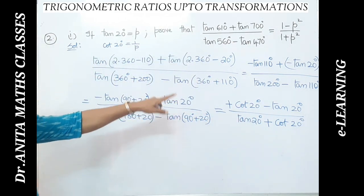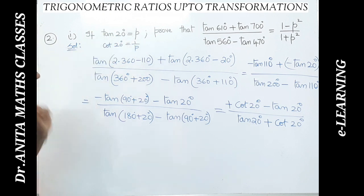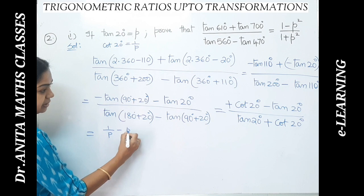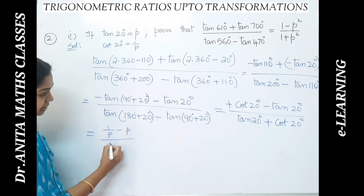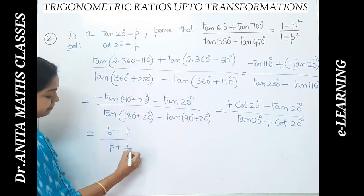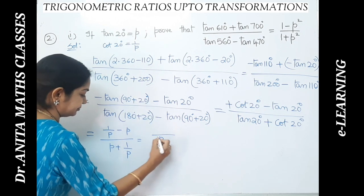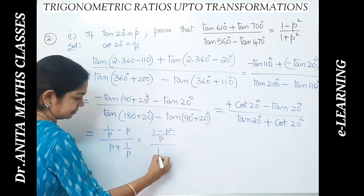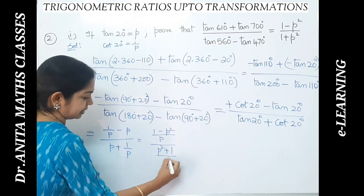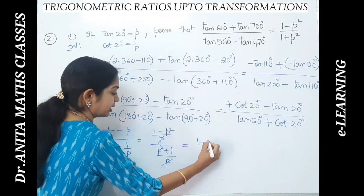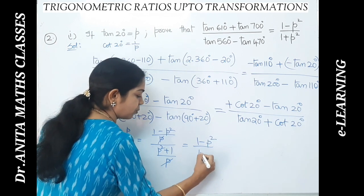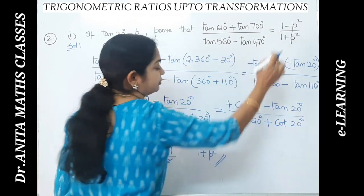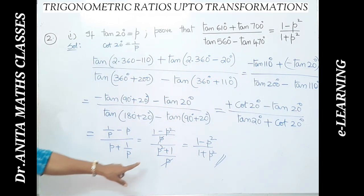Substituting the values: cot20° = 1/p and tan20° = p. The expression gives: 1/p − p + 1/p. Taking LCM, this becomes (1 − p²)/p + 1/p = (1 − p² + 1)/p... simplifying to (1 − p²)/(1 + p²). This is the RHS that we had to prove. Please pause the video and note it down.